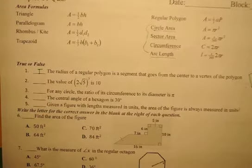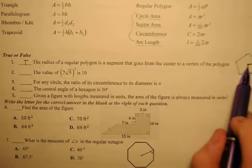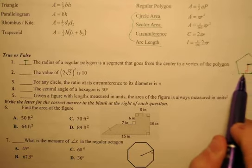The radius of a regular polygon is a segment that goes from the center to the vertex. Yeah, I would say that's true. Whereas an apothem goes from the center and is perpendicular to the side.